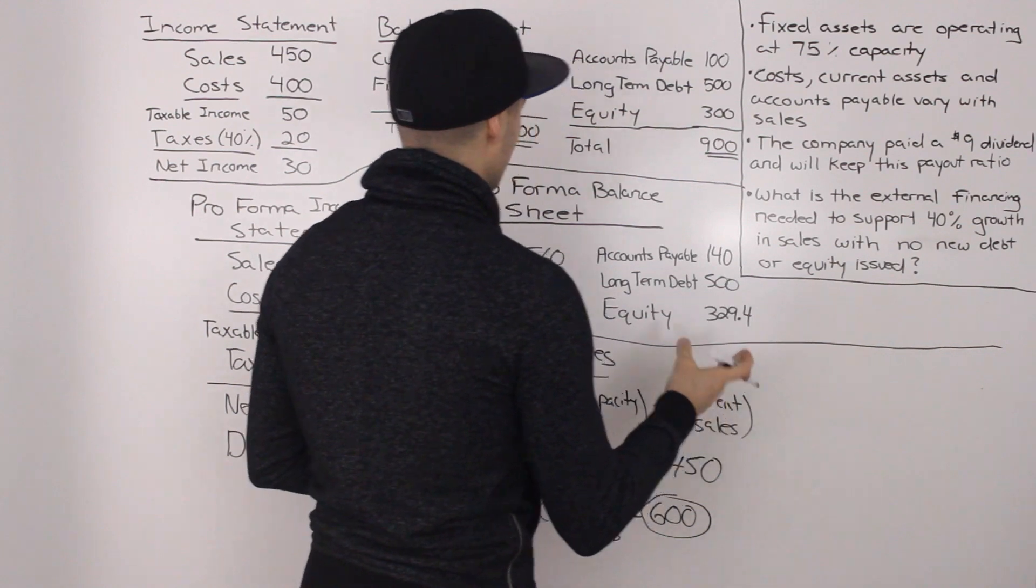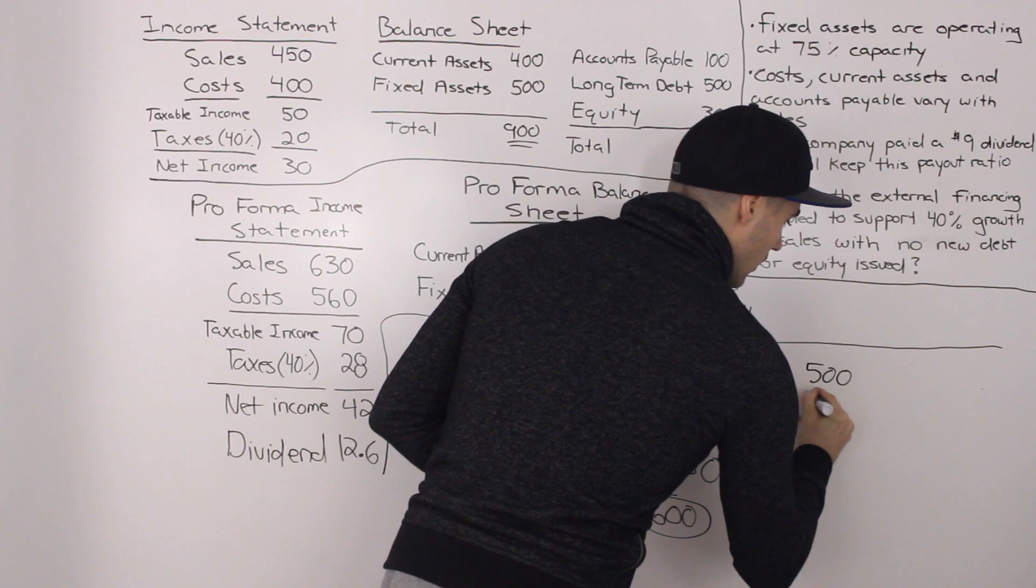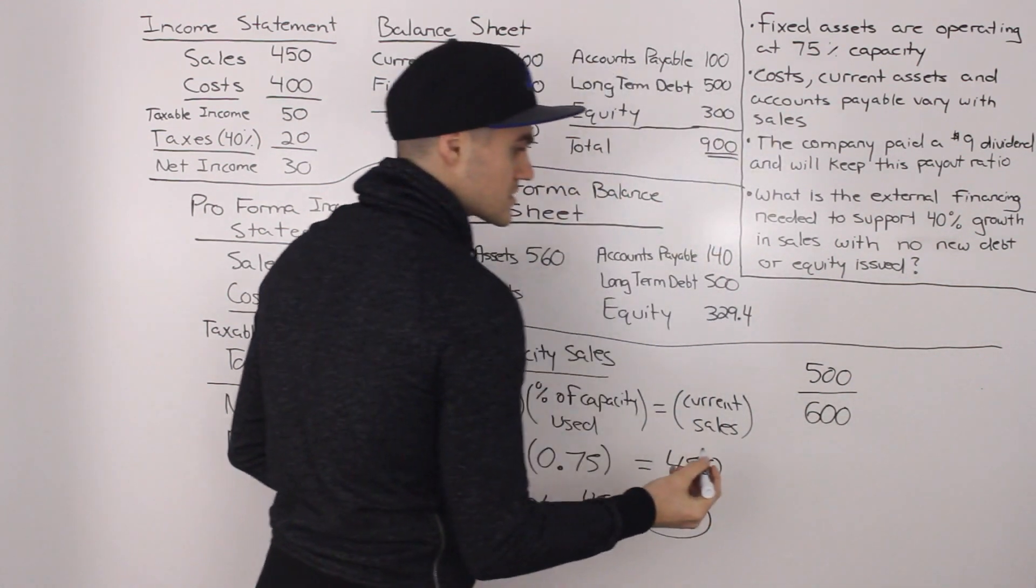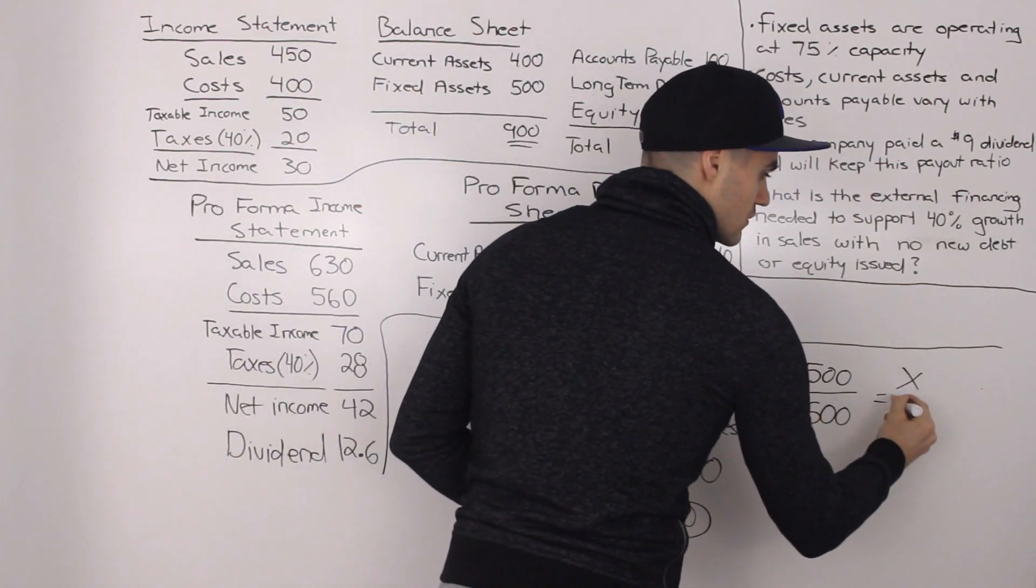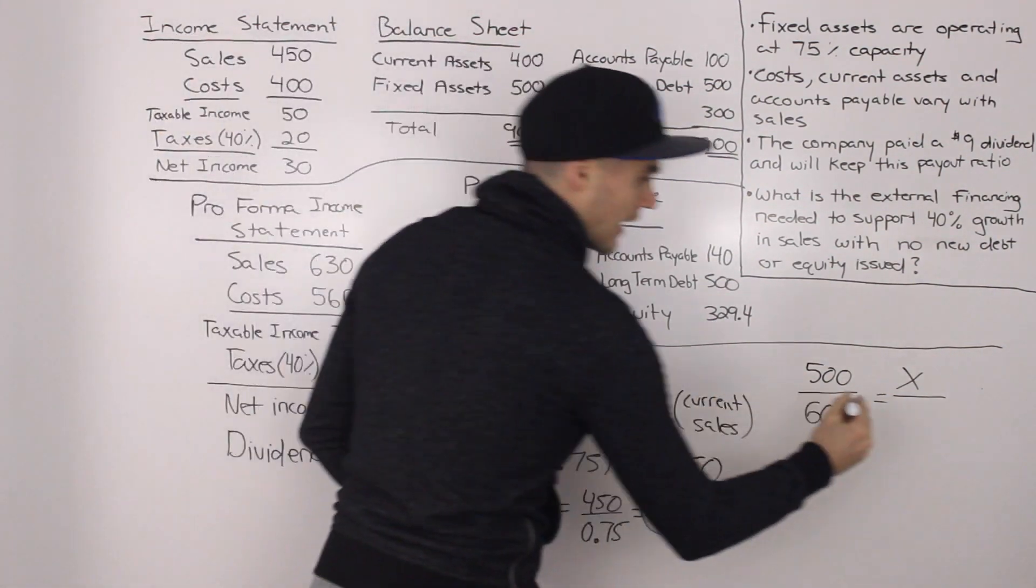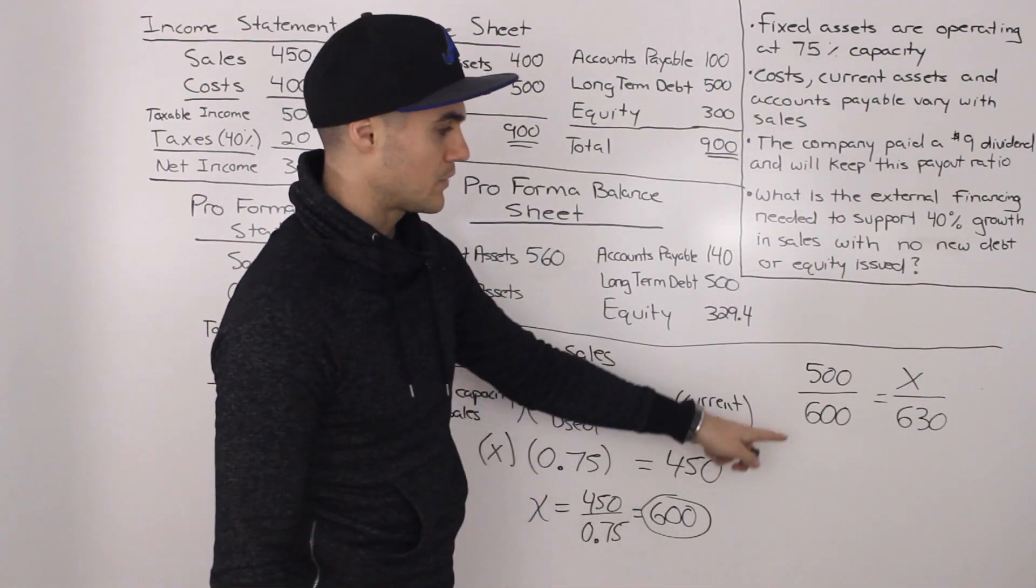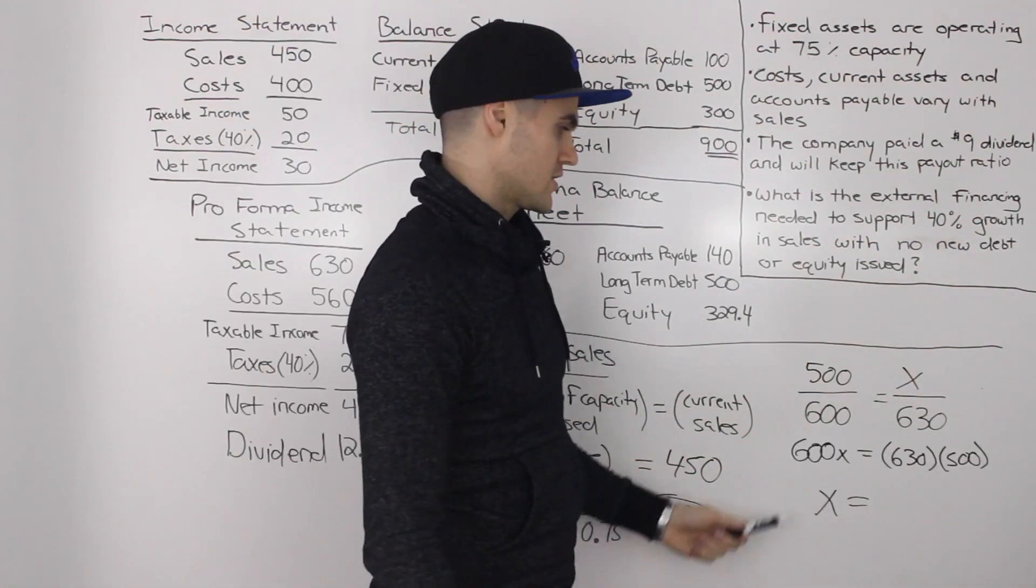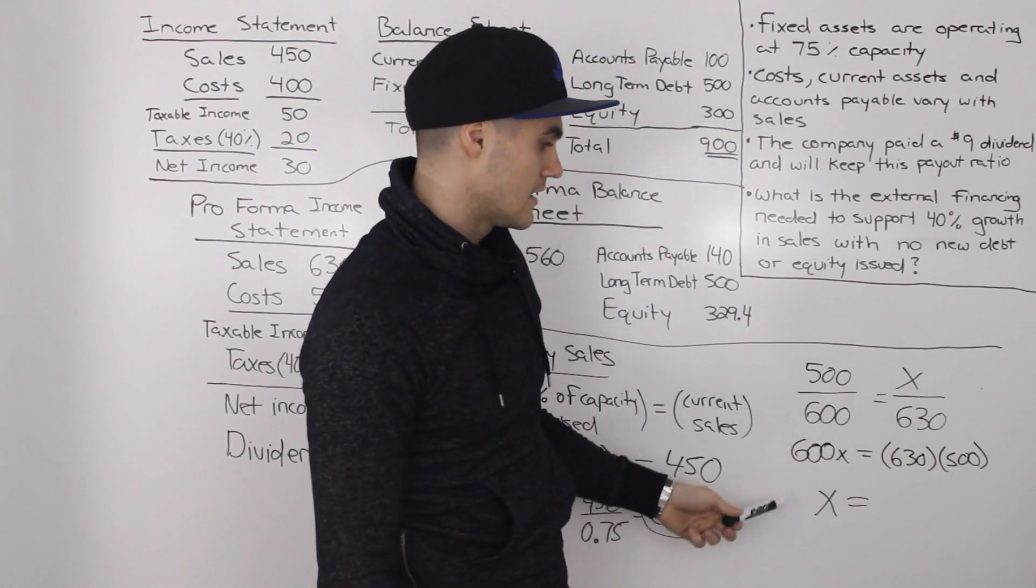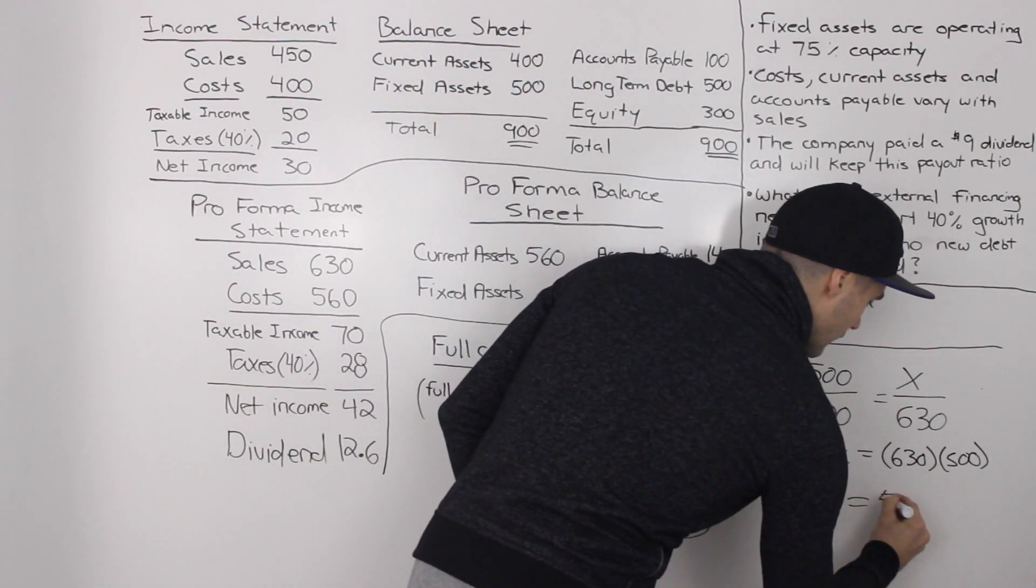So you would take the ratio of the current fixed assets of $500. So $500 of fixed assets is capable of generating $600 worth of sales. Well then, how much fixed assets is capable of generating $630 worth of sales? Basically, these ratios have to be the same. And now we can just cross multiply and solve for x. So 600 times x gives us 600x and then 630 times 500 is here on the right side, then divide both sides by 600. Isolating for x, we would get $525.